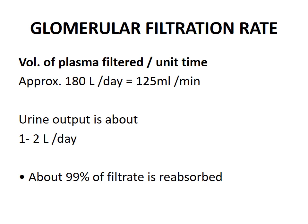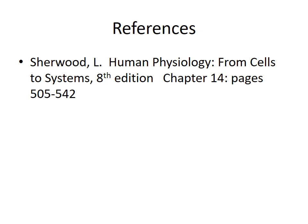GFR is the volume of plasma filtered per unit time by all nephrons in both kidneys — approximately 180 liters per day or 125 ml per minute. Urine output is about 1–2 liters per day, meaning about 99% of the filtrate is reabsorbed. We will have another session on renal physiology for questions, clarifications, and further discussion. Thank you for listening.